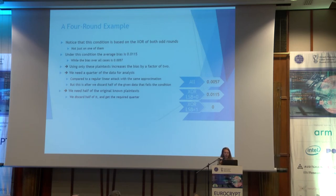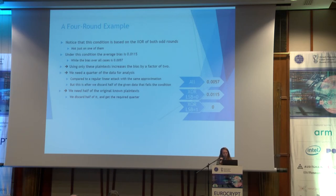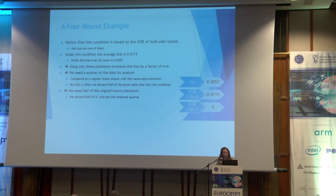As the number of required data is quadratic in the bias to the minus one, it reduces the number of needed known plaintexts by a factor of about four. On the other hand, since we discard about half of the data, we need two times this reduced number of known plaintexts. So the attack requires a total of about half the known plaintexts of the original attack, discards about half of them, and then uses the rest to find the key.